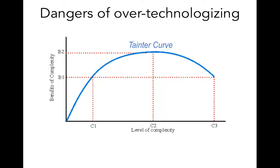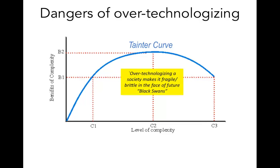The second concept is the Tainter curve, which has also been discussed in another paper at this workshop. It reflects the effect of over-technologizing: while initially some complexity yields certain benefits, beyond a certain threshold if a society or system becomes very complex we see not only diminishing returns but also a collapse. This is very important to recognize, and in some way our networking is also becoming very complex.